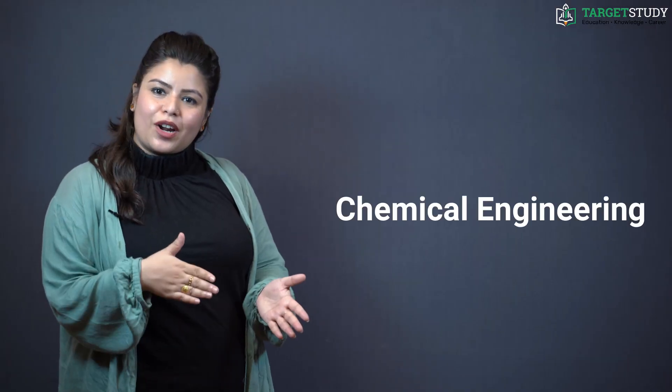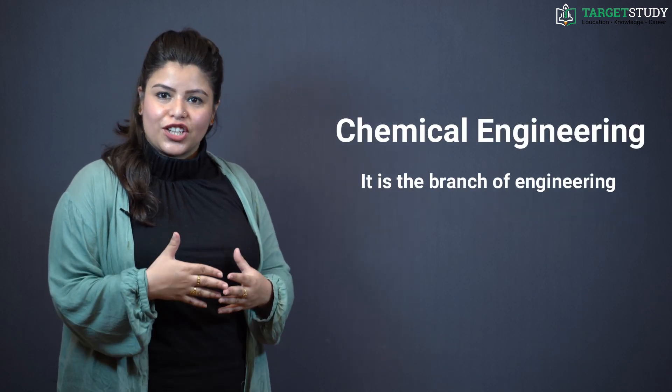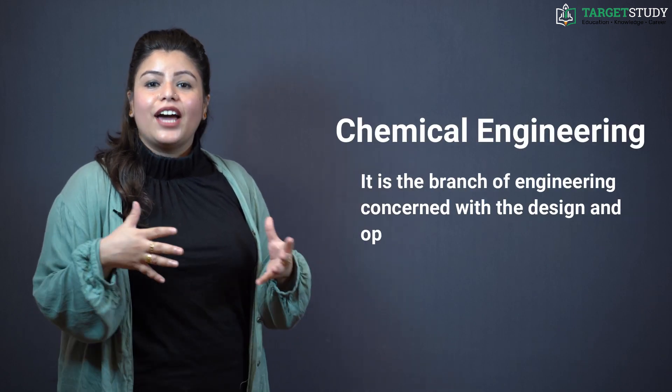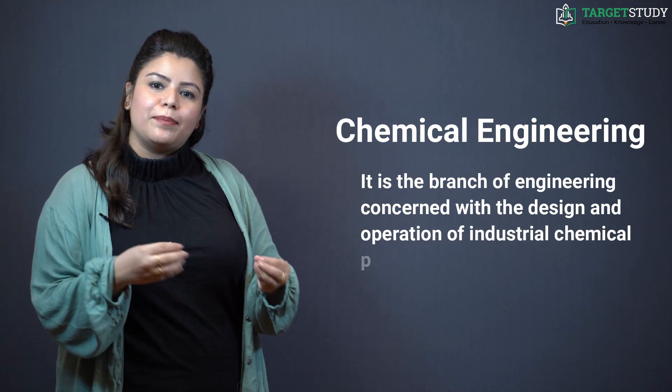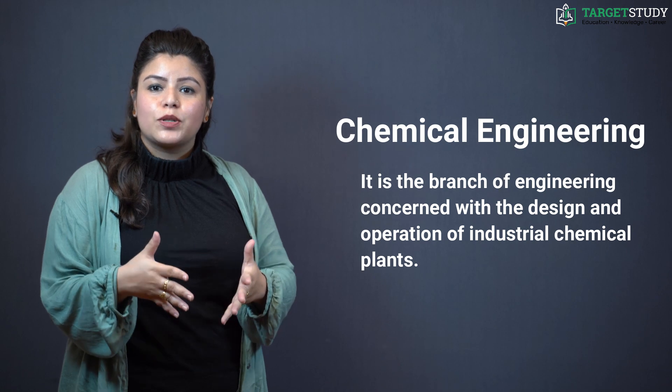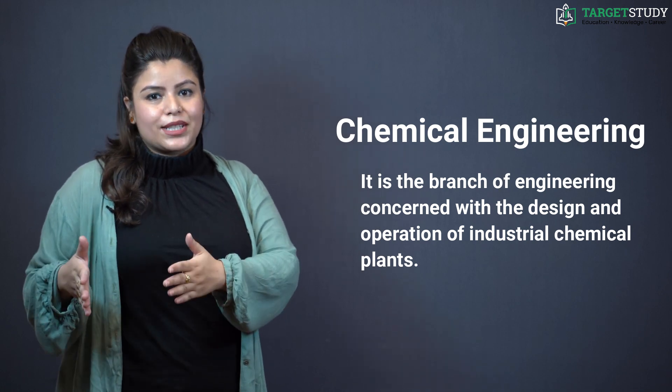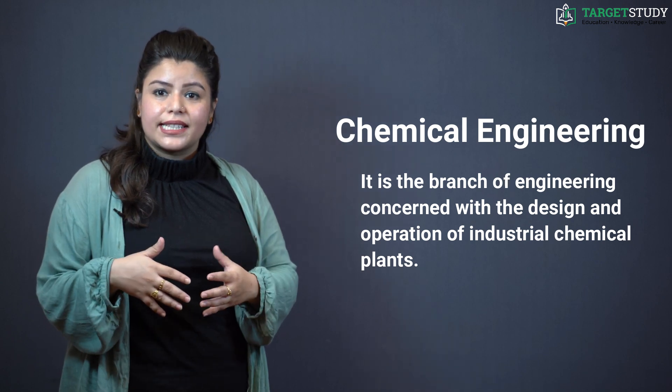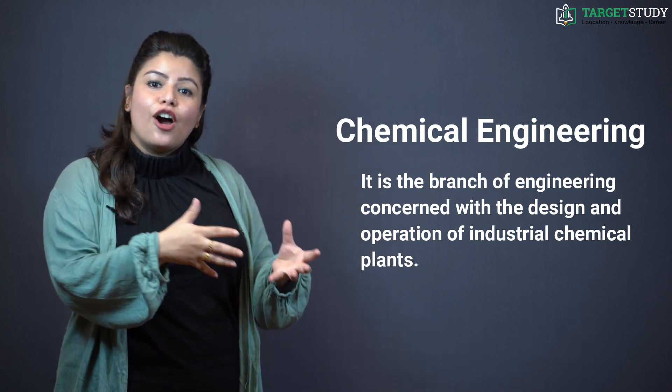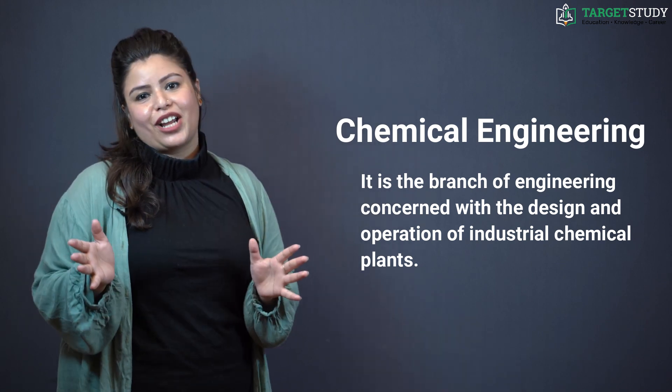Now we'll be talking about the next branch that is chemical engineering. It is the branch of engineering concerned with design and operation of industrial chemical plants. In broad terms, chemical engineering helps to conceive and design processes to produce, transform and transport materials beginning with experimentation in laboratory followed by the implementation of technology in full-scale production.